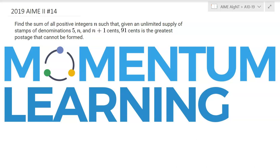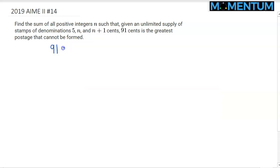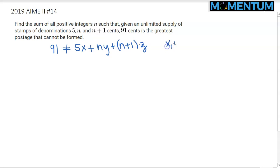This is 2019 AMC 2, problem number 14 — a number theory problem. We would like 91 to be the largest number which cannot be written as a linear combination of the numbers 5, n, and n+1, where x, y, and z are non-negative integers. So 91 is the largest one that cannot be hit.